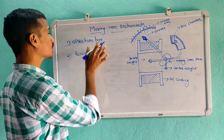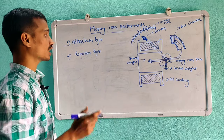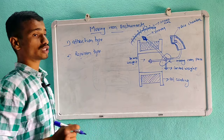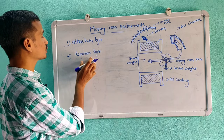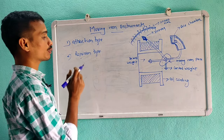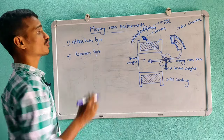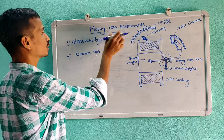Now, we have two types of moving iron instruments. The first one is attraction type instruments, and the second one is repulsion type instruments. These are the two types of moving iron instruments.